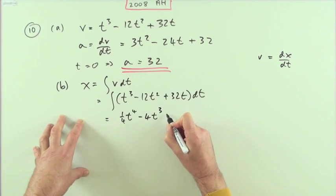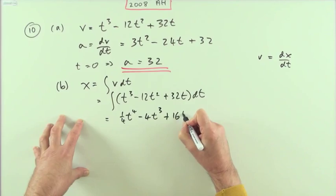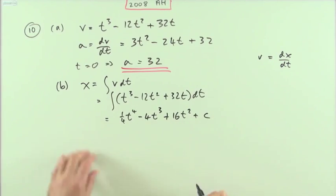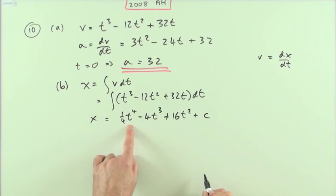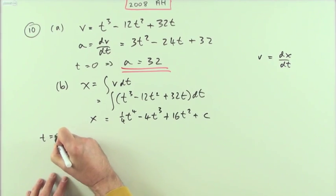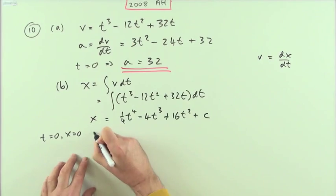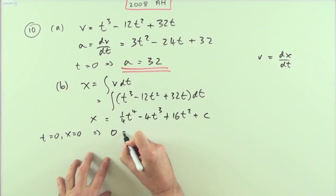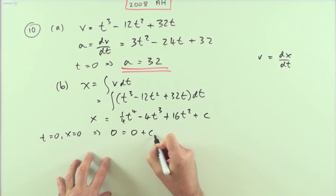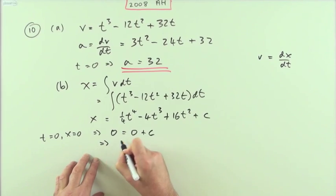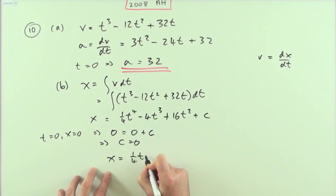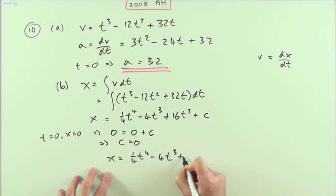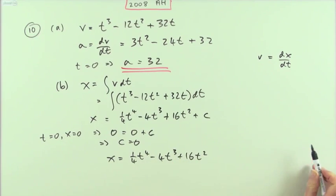Integrating gives one quarter t to the four, minus four t cubed, plus 16t squared plus some constant c. But it says that at time zero the displacement x is also zero, so zero equals all those terms plus c, which means c is zero. So the formula for displacement is one quarter t to the four minus four t cubed plus 16t squared.